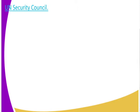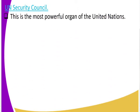Let us get to the heart of our discussion — the United Nations Security Council. This is the most powerful organ of the United Nations. Apart from the General Assembly, it is one of the most powerful organs of the United Nations. Let us now look at how many members it comprises.